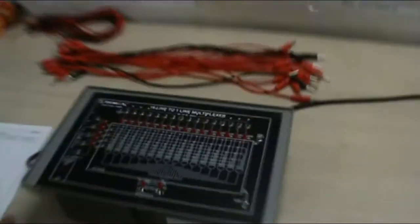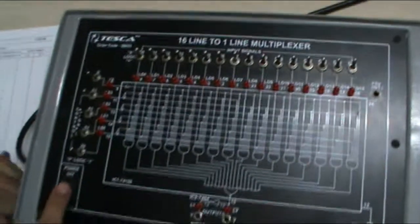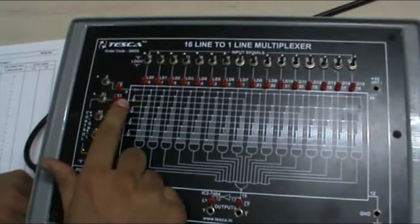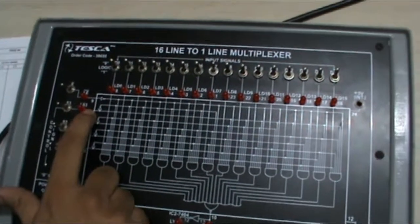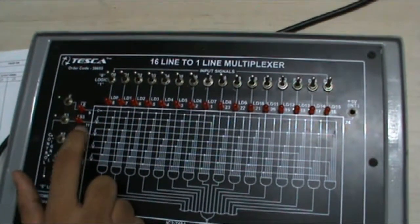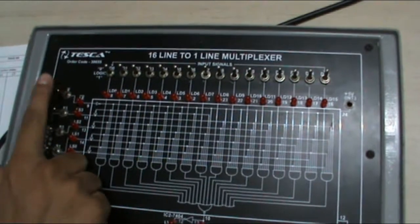Now this is our equipment. In this, this is our power main on off switch. This is the 4 control inputs LS0, LS1, LS2, LS3. This is the enable switch.